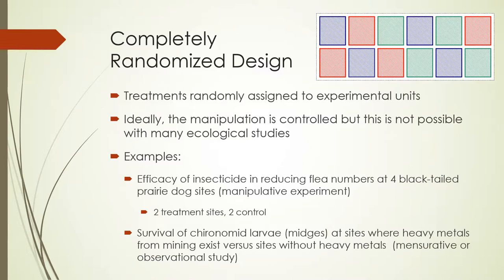The simplest experimental design is a completely randomized design. As the name implies, treatments are randomly assigned to experimental units. Ideally, the manipulation is controlled, though this is not possible in many ecological studies. For example, if you're interested in the efficacy of an insecticide for reducing flea numbers at black-tailed prairie dog towns, you might randomly choose four towns and assign two as treatment sites where insecticide is applied and two as controls.